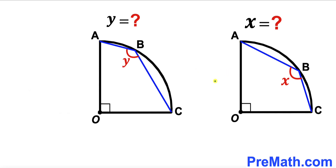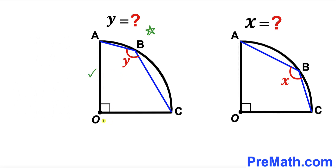Welcome to pre-math. In this video we have two sets of problems. The first problem involves a quarter circle with center O, two chords AB and BC, and these two chords make an angle X. Our task is to find the value of angle X. Likewise, the second problem involves a quarter circle with center O, chords AB and BC, forming angle Y, and our task is to find the value of angle Y.